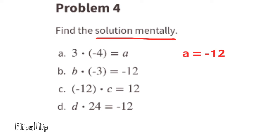Part b: B times negative 3 equals negative 12. Since a positive times a negative equals a negative, and 4 times 3 is 12, B must be positive 4. We can also work this backwards: negative 12 divided by negative 3 equals positive 4, so B equals positive 4.